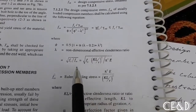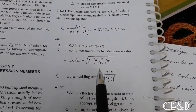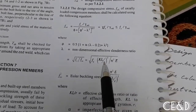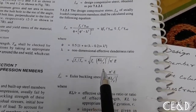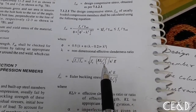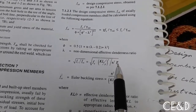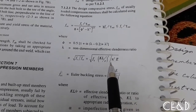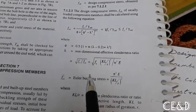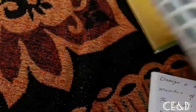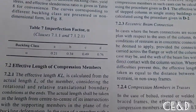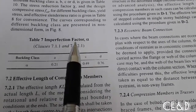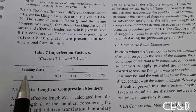The non-dimensional slenderness ratio lambda is given by: under root of (FY × (KL/r)² / (π² × E)). Here KL is the effective length of the column, r is the minimum radius of gyration, and E is Young's modulus for steel = 2 × 10⁵ N/mm². Alpha is the imperfection factor obtained from Table 7 based on the buckling class.